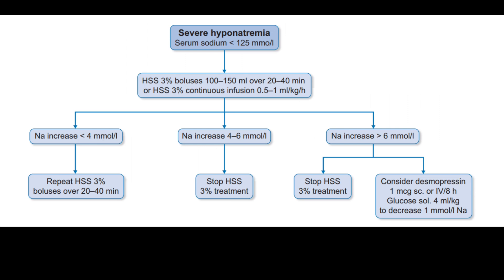Outcome based on sodium increase: if sodium increases by less than 4 mmol/L, repeat 3% NS boluses over 20 to 40 minutes. If sodium increases by 4 to 6 mmol/L, stop 3% NS treatment. If sodium increases by greater than 6 mmol/L, stop 3% NS and consider desmopressin 1 mcg subcutaneously or IV every 8 hours, or glucose solution 4 mL/kg to decrease sodium by 1 mmol/L.